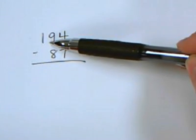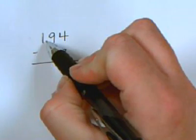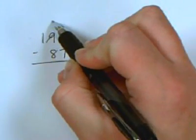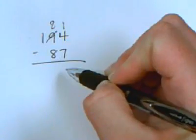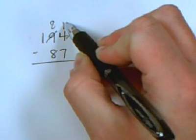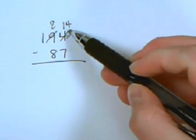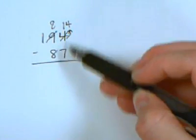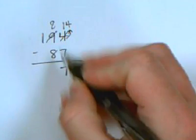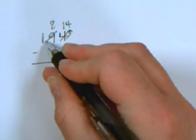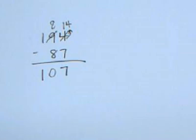So we're going to look to the tens first and we're going to borrow. What we say in class is take one from a friend, move one over, keep the 4. So now we have 14 minus 7, which we can do. 14 minus 7 is 7, 8 minus 8 is 0, 1 minus nothing is 1. So our answer is 107.